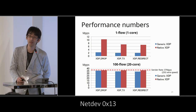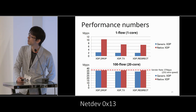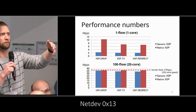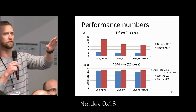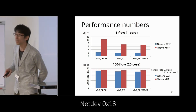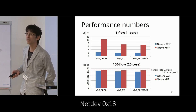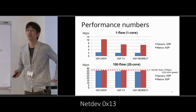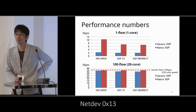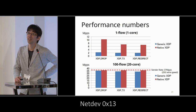Audience question: you probably didn't need 20 cores to achieve saturation — you could have done it with four or five? The speaker confirmed that's right. With 20 cores, generic XDP gets close to the top, but with native XDP you only need maybe five cores to reach wire speed.